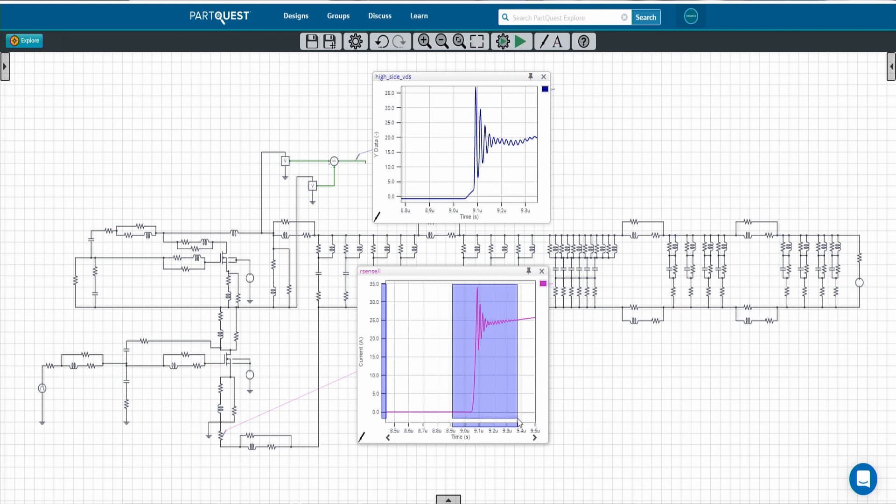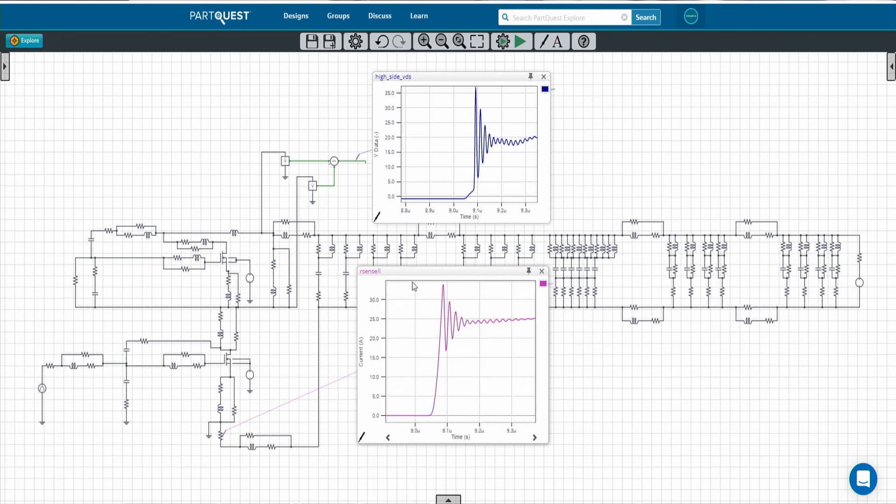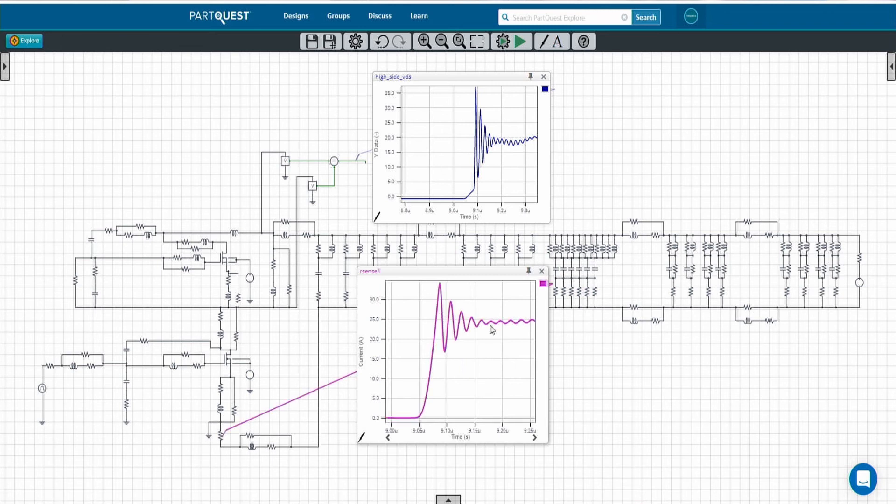Again we are looking mainly at the frequency of the oscillation, the damping of the oscillation, and the QRR area. We have a very good match between the measurement and the simulated data.